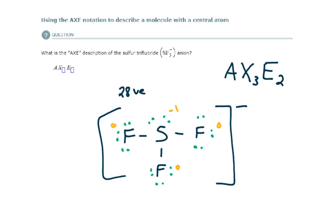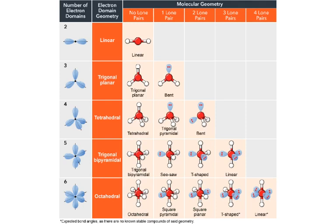Let's count electron domains, just to do it. Around the central atom, I have 1, 2, 3, 4, 5 electron domains. 2, 3, 4, 5. Trigonal bipyramidal is the electron domain geometry for that molecule.